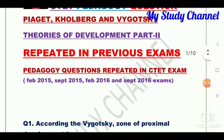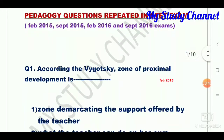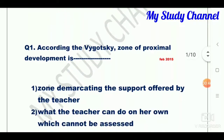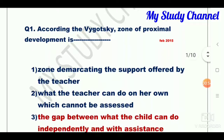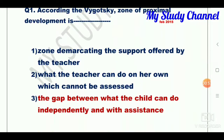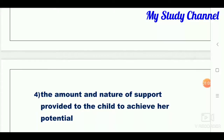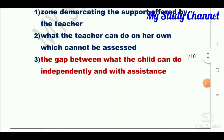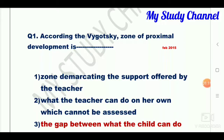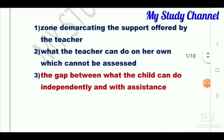Without wasting time, let's start from question number one. According to Vygotsky, zone of proximal development is dash. This question was repeated in the February 2015 exam. The options are: zone demarcating the support offered by the teacher; what the teacher can do on her own which cannot be assessed; the gap between what the child can do independently and with assistance; and the amount and nature of support provided to the child to achieve her potential. Option three is the right answer: the gap between what the child can do independently and with assistance.